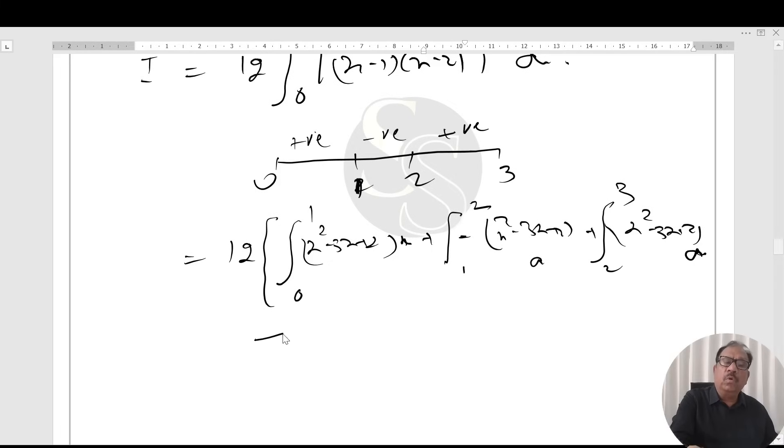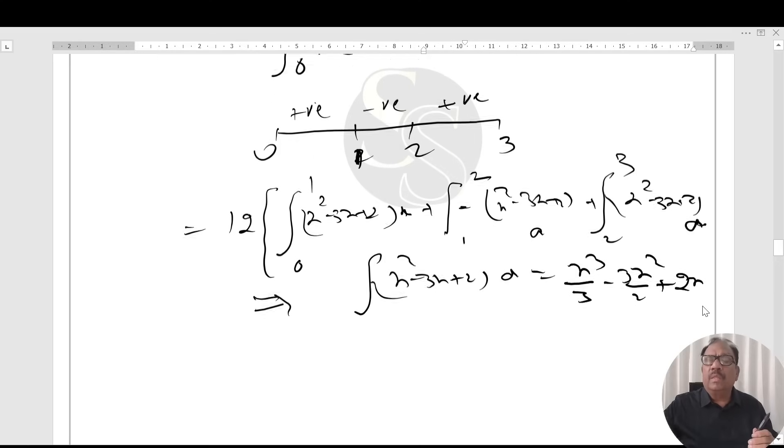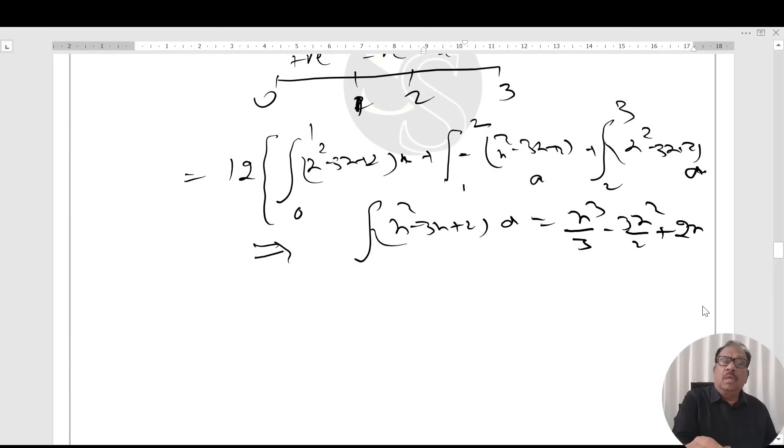Now we know integration of x squared minus 3x plus 2 dx. That is x cubed by 3 minus 3x squared by 2 plus 2x. Then, on substituting limits and simplification, we get...